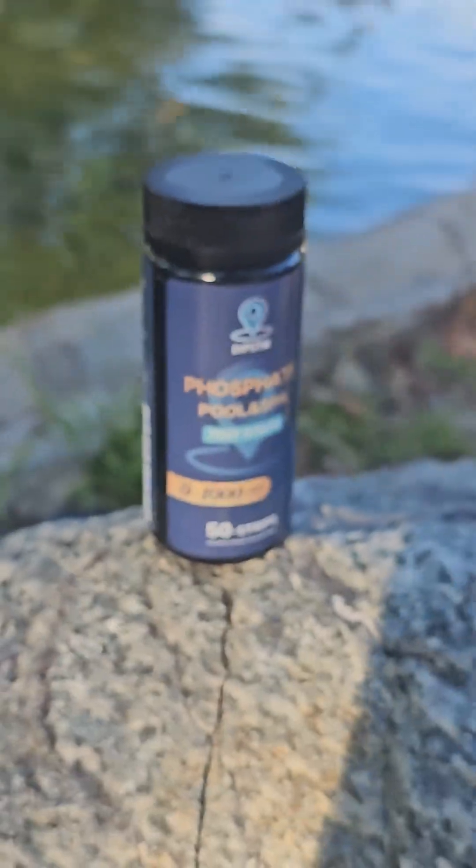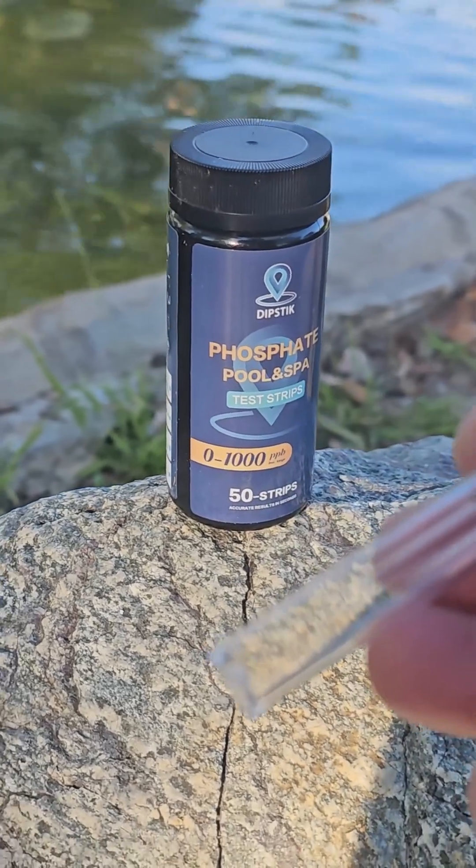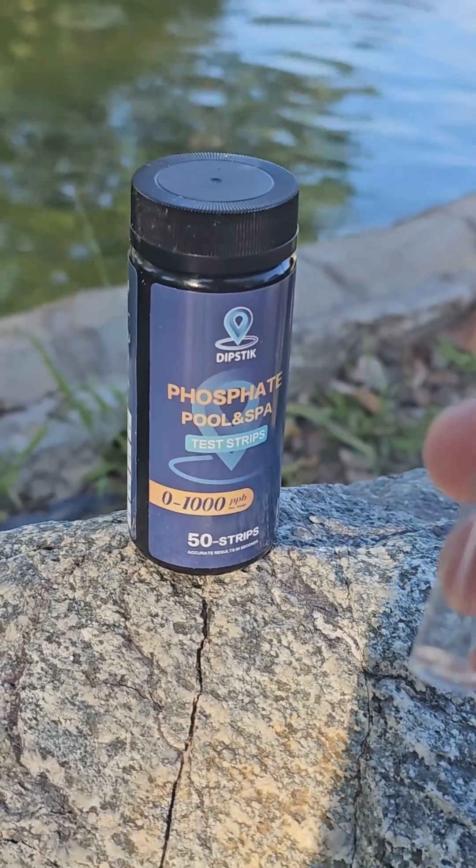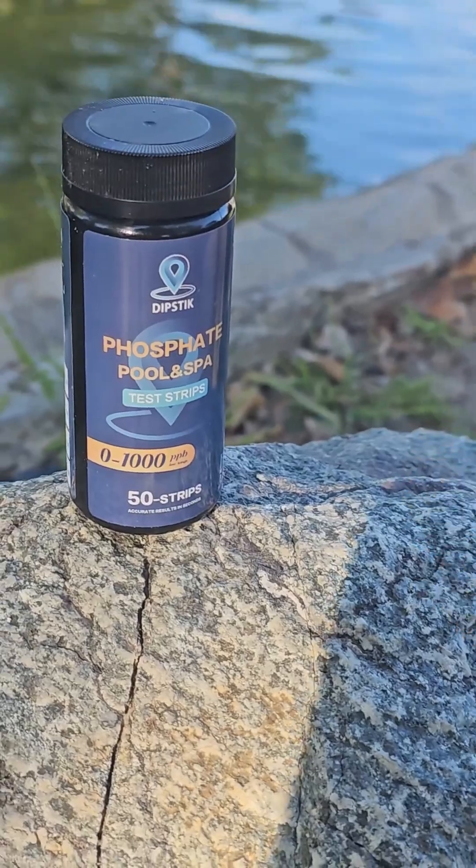You grab one of the strips, you put it in here. Make sure that the strip bottom part of the reading part is facing towards the water. I know we need chemicals in here, so we're going to grab a little bit of water.